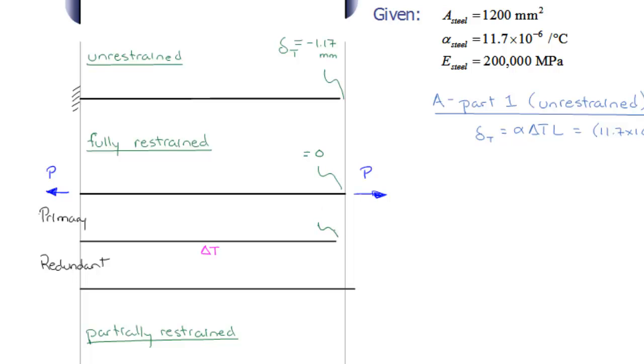And it will have a displacement in here. We'll call that delta prime. And we know that that's going to be equal to alpha delta T multiplied by L.